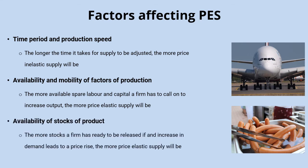Finally, there's the availability of stocks of a product. If a business has lots of available stocks that they can release as price increases, supply is more likely to be price elastic. This is why a lot of agricultural output is relatively price inelastic in supply — much of that output is perishable, so you can't store it for long periods and then release it as price increases, making it more price inelastic.